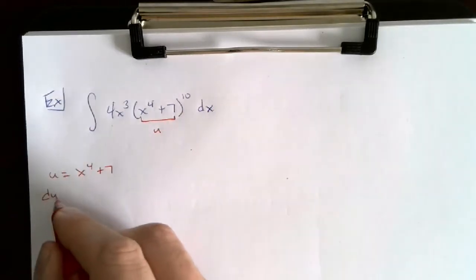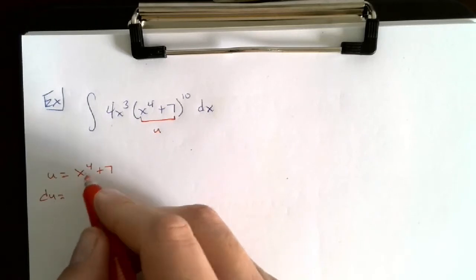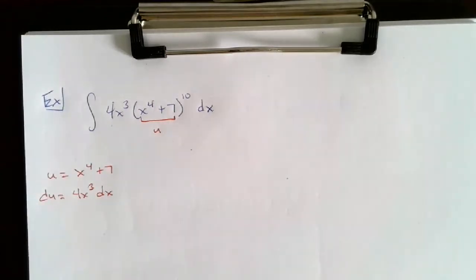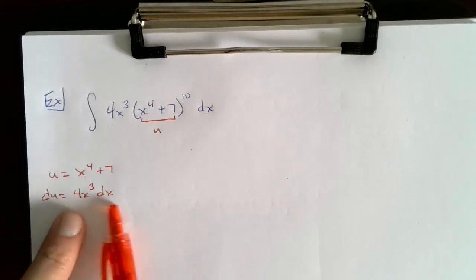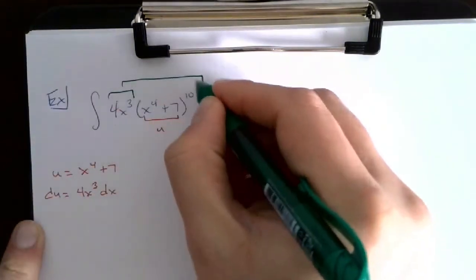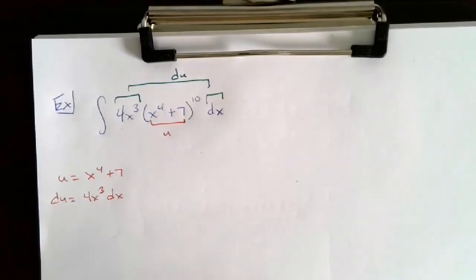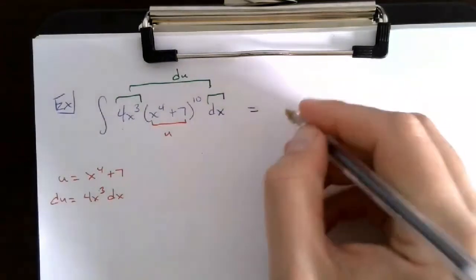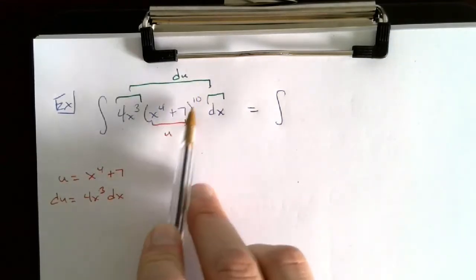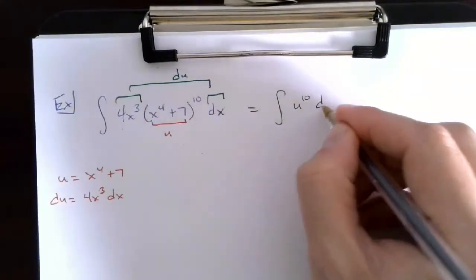Now I find du — the derivative of u, not just something I push into the problem. The derivative of x⁴ + 7 is 4x³ dx. Looking at my integral, I have exactly 4x³ dx, so the entire piece gets replaced by du. The substitution gives: integral of u^10 du, with no x's remaining.